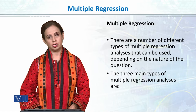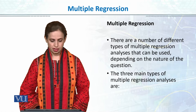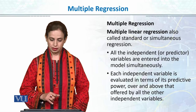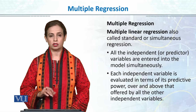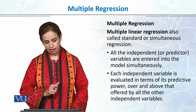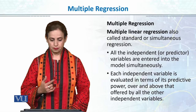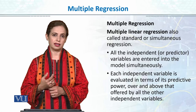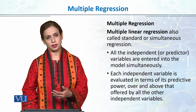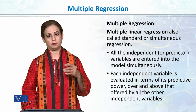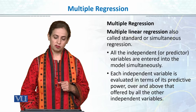There are a number of different types of multiple regression analysis that can be used depending on the nature of the data and the research question. There are three main types. First, we have simple multiple regression, which we call the simultaneous method. In simultaneous regression, all the independent variables are entered into the model at the same time. Each independent variable is evaluated in terms of its predictive power over and above that offered by all the other independent variables, giving each variable's beta coefficient equally.